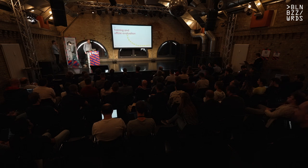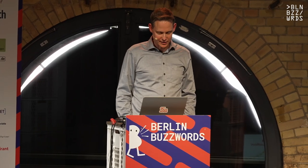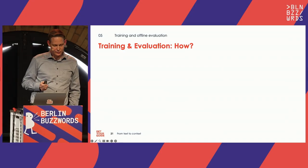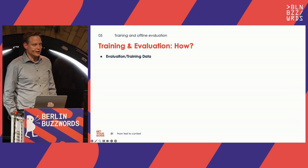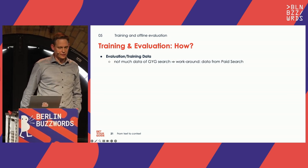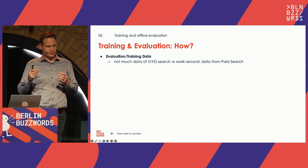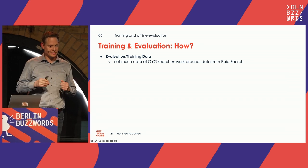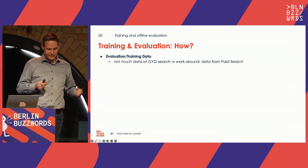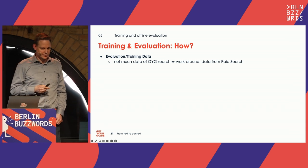Now we talk about how we trained and evaluated the model for hybrid search. The first question was: what do we use for evaluation and training data? The challenge was that at Get Your Guide, the search bar copy just said 'where do you go?' — so users typed mainly locations. We wanted to move away from pure location queries to also include topics like 'pizza' or 'family friendly.'